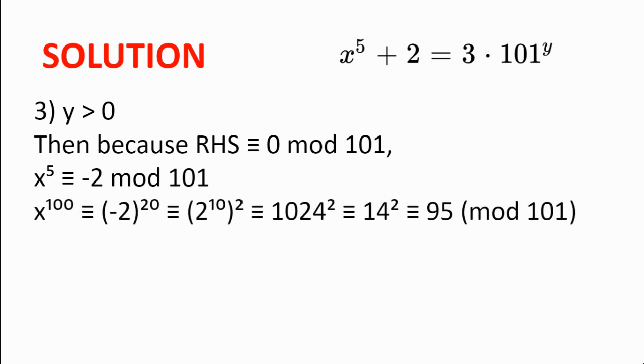So x to the power of 100 is equal to x to the power of 5 to the power of 20, which is congruent to minus 2 to the power of 20, which is equal to 2 to the power of 10 squared, which is 1024 squared, which is congruent to 14 squared, or 95 modulo 101.